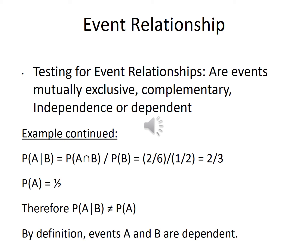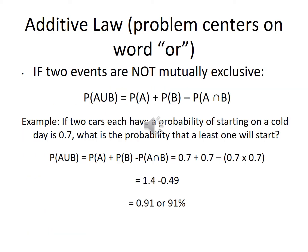The additive law: the key word is 'or.' If two events are not mutually exclusive, P(A∪B) = P(A) + P(B) − P(A∩B). For example, if two cars each have a 0.7 probability of starting on a cold day, what's the probability at least one will start? You plug and chug using that formula. If the two events are mutually exclusive, the formula reduces to simply P(A) + P(B). Example: reaching into a dark drawer, P(black sock) = 0.2, P(blue sock) = 0.4, so P(blue or black) = 60%.